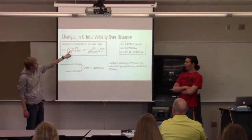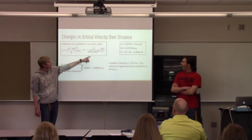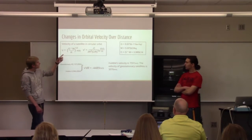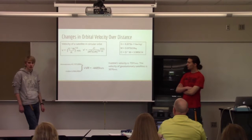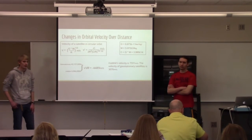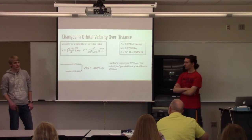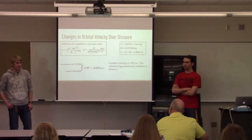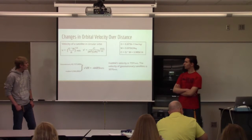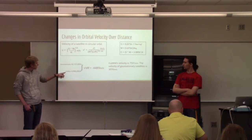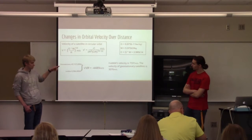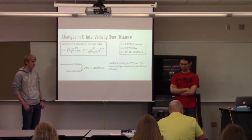I just combined these two together to make it easier on myself for the calculations and just named it C. And I took the derivative of this to see how quickly velocities were changing and how satellites at different radii traveled compared to each other. Here I compared the velocity of Hubble from a satellite in geostationary orbit.